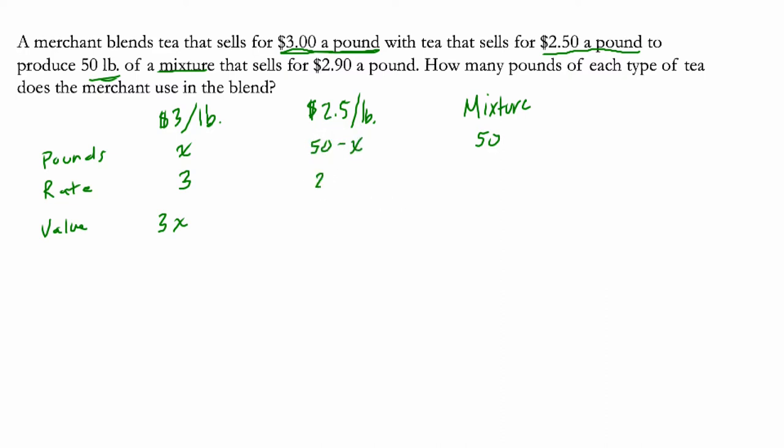Now, the rate for the $2.50 a pound is $2.50. And the value would be the product of these two, $2.50 times 50 minus X. And the mixture, they tell us it's going to cost $2.90, so that's $2.90 times the size of the mixture, right? It's $2.90 for each pound, in this case, 50 pounds.